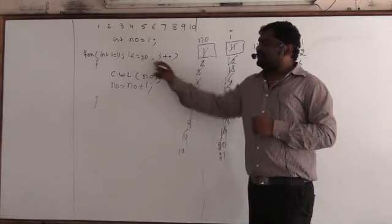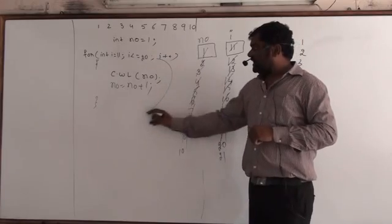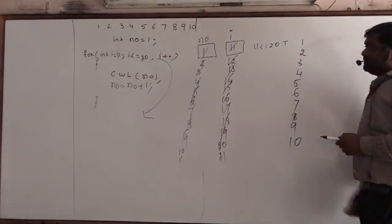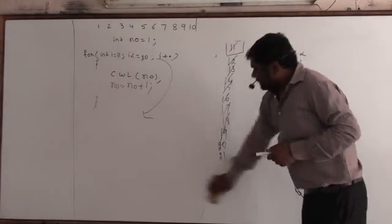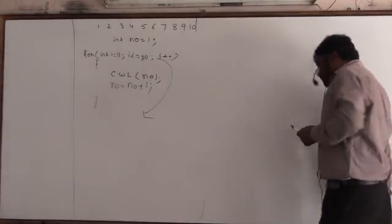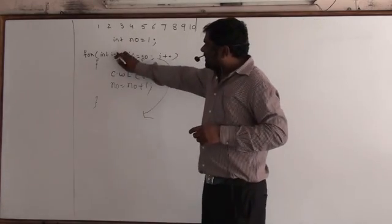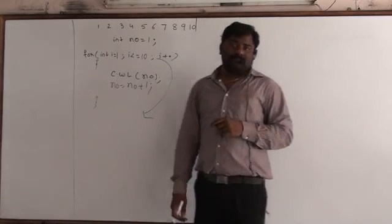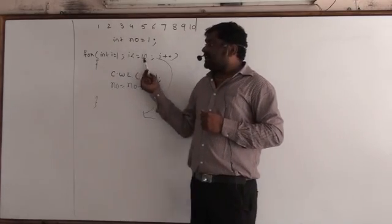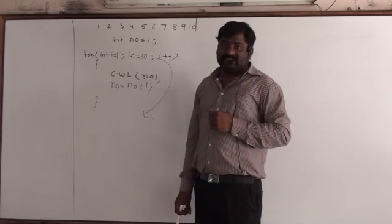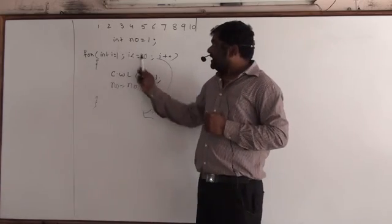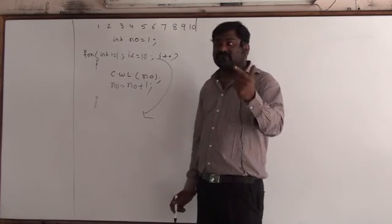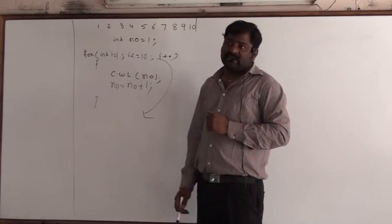Now i is 21. 21 less than or equals 20 — false. Come out of the loop. So the problem is, many people get confused because we fix i starting at 1 and loop up to 10. They think i always means 1 and we loop 10 times. But you can start the initial value wherever you want — the initial value depends on your flexibility. The key insight is: I have written 1 and 10 because I want to print 1 to 10 numbers.